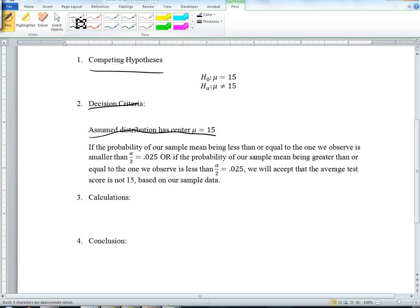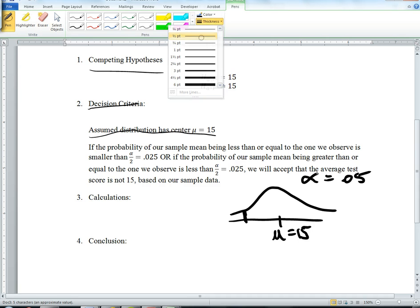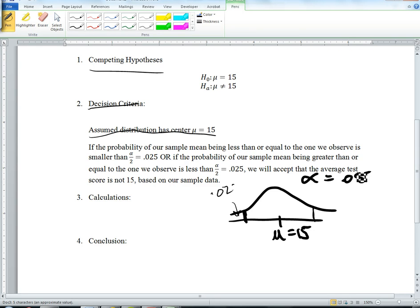So let's just say our distribution looks like this. It's always approximately normal, and it's centered at mu equals 15. Since we're doing a non-directional test, that means that if our alpha is equal to 0.05, then we're going to split the tails to be 0.025 each.